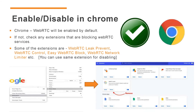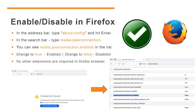Next, let us look at how we can enable or disable WebRTC in the Mozilla Firefox browser. In Firefox, WebRTC is also enabled by default. However, if you want to disable the WebRTC feature, you can do so through the browser settings option — no extensions are needed in Firefox.